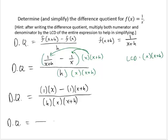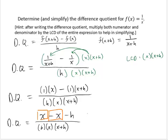Continuing to simplify the numerator, I'd have x minus x minus h by the distributive property. And I have h times x times x plus h in the denominator. Continuing to simplify, those x's subtract to zero, leaving negative h over h times x times x plus h.